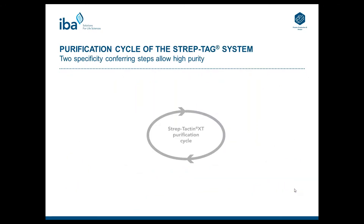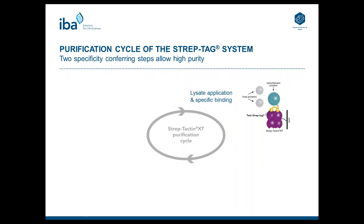Next, we look at the very easy and straightforward purification cycle of the Streptag system, showing the purification of a recombinant protein carrying a Twin Streptag using Streptactin XT as purification resin. The quick purification process includes two specificity-conferring steps which allow the purification of highly pure proteins after a single purification cycle. This purity is usually above 98%. The first specificity-conferring step occurs during lysate application — it is a highly specific binding of the Twin Streptag with the resin. After this, a wash of the column is performed using a physiological buffer like PBS. The tendency of Streptactin or Streptactin XT to bind nonspecific proteins is very low, and physiological buffer conditions preserve the bioactivity of enzymes or protein-protein interactions.